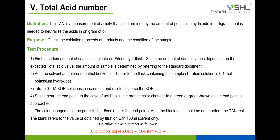Finally, we learn about the test method of total acid number (TAN). The TAN is a measurement of acidity determined by the amount of potassium hydroxide in milligrams needed to neutralize the acids in one gram of oil. The purpose of this method is to check the oxidation progress of products and the condition of the sample. For most lubricants, they have a relatively small initial TAN index that gradually increases during use. TAN is often used to evaluate the degree of oxidation of oil during use. For lubricants with anti-wear additive zinc dialkyl dithiophosphate, such as hydraulic oils, they contain high initial acid content, so the initial TAN value cannot accurately assess the quality of the oil.